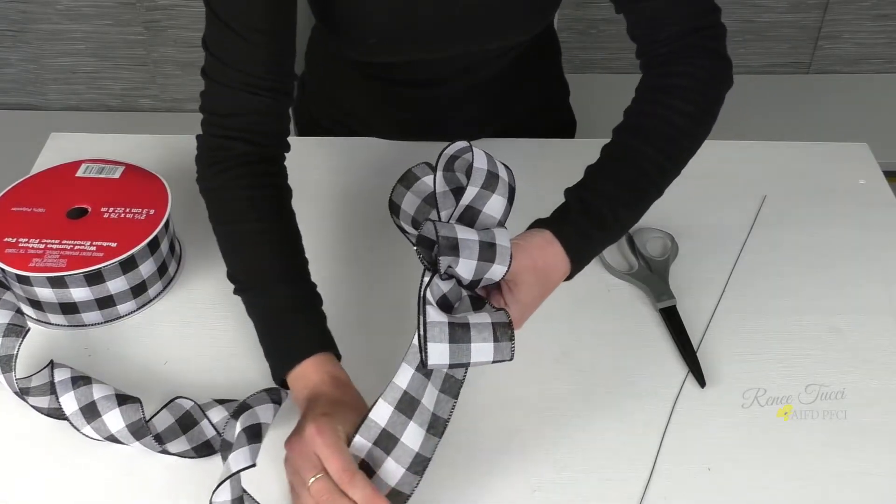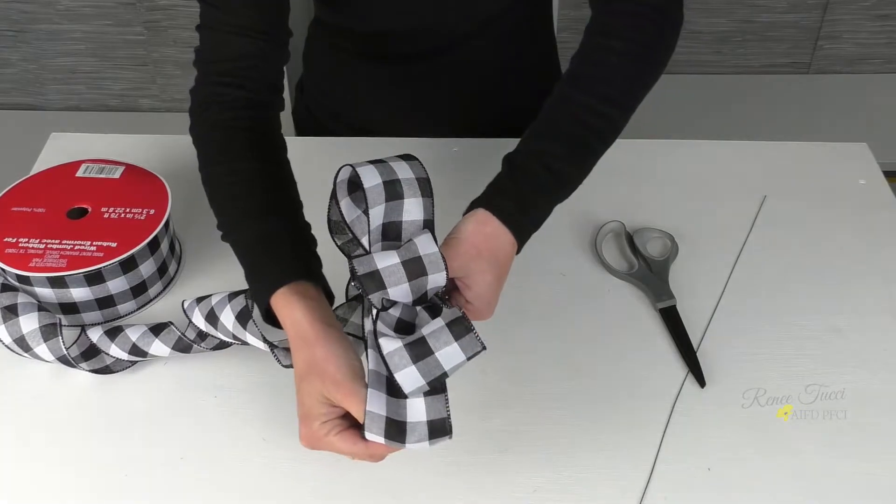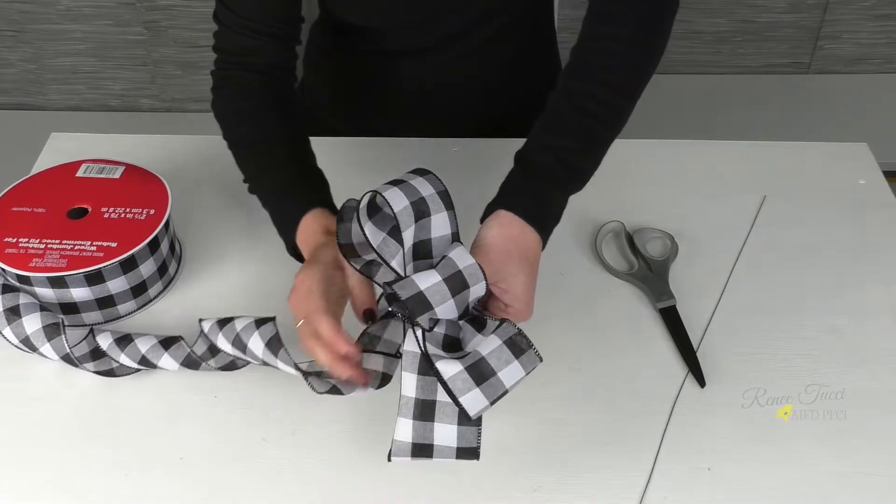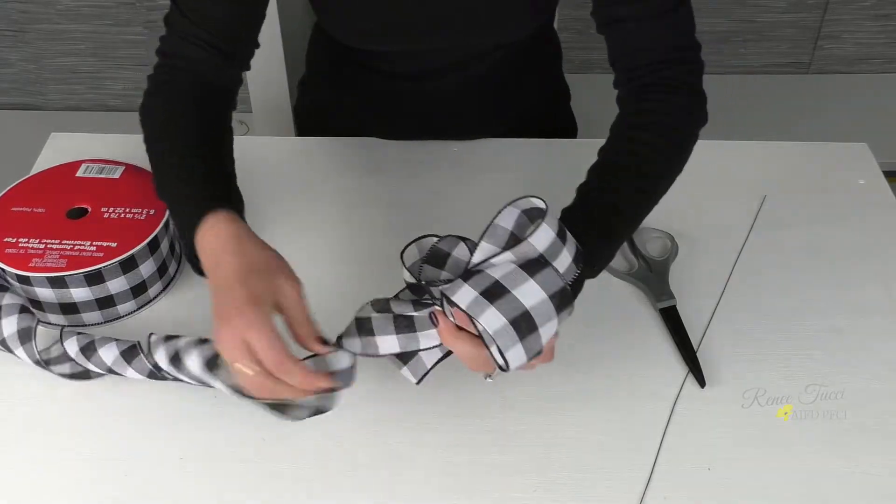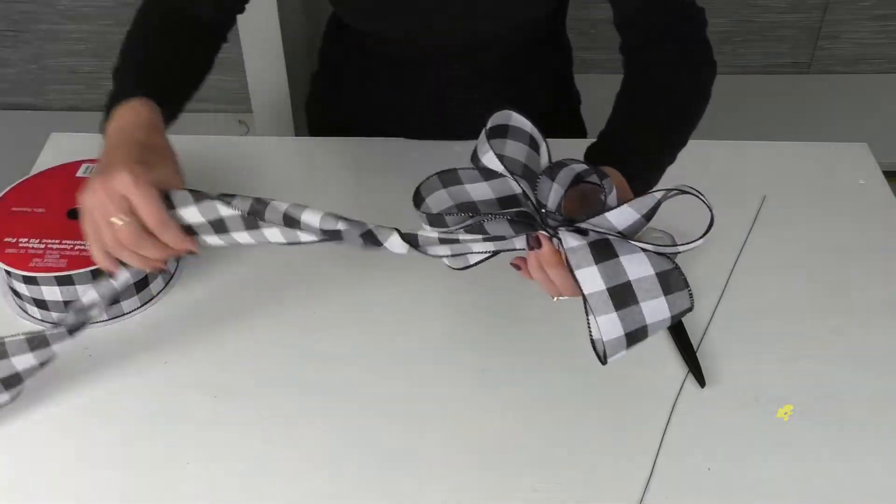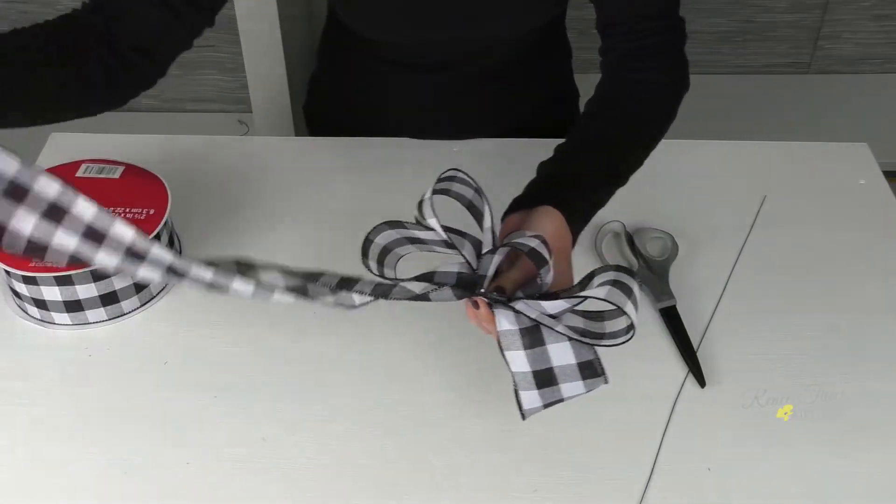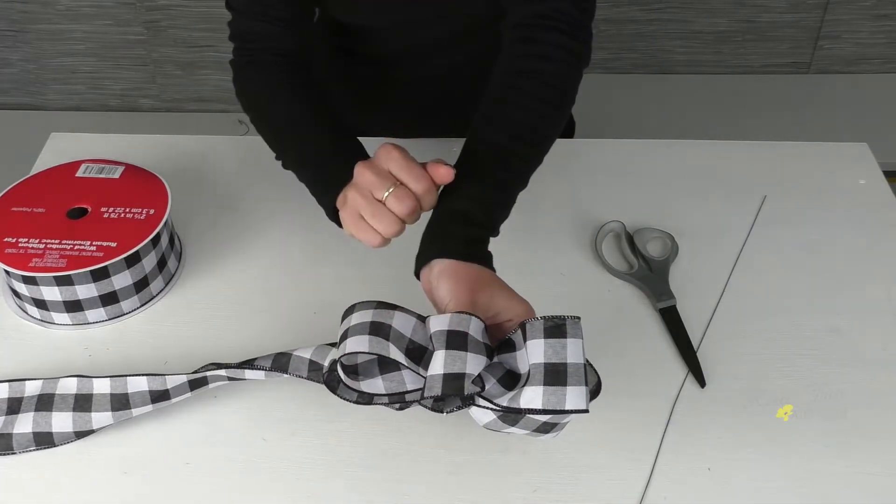Then again, we're on the other side. We're going to bring that slightly longer than our first loop and run it back to the center. Give it a twist. Give yourself some slack on the bolt and your ribbon will twist for you on the bolt. So you'll have to undo that as well. So now we've got a center and two loops on each side.